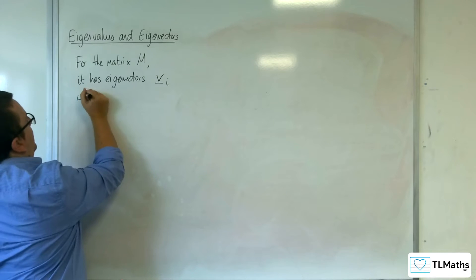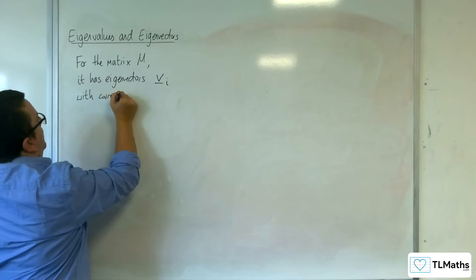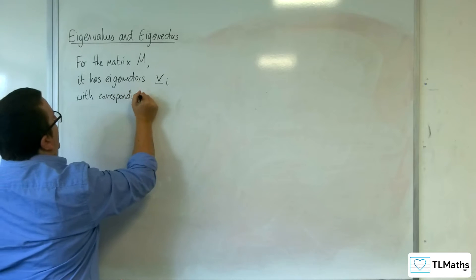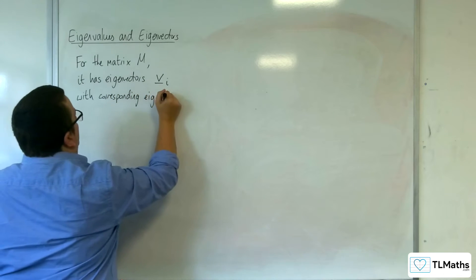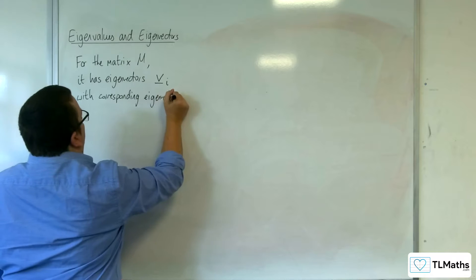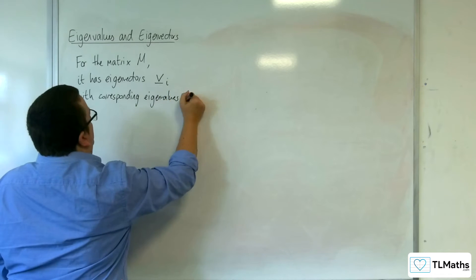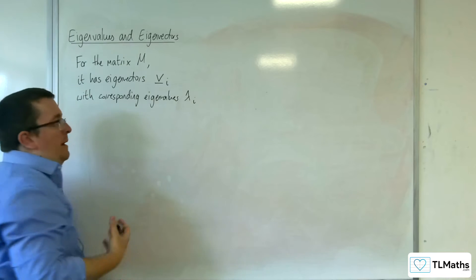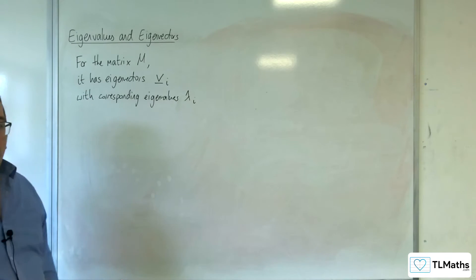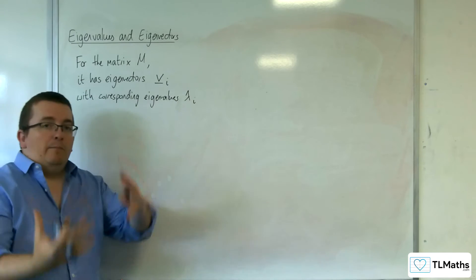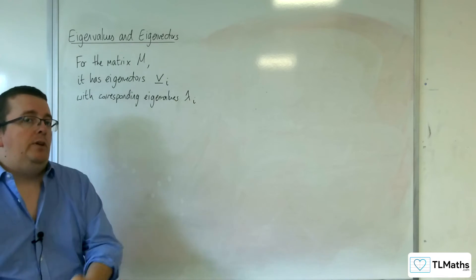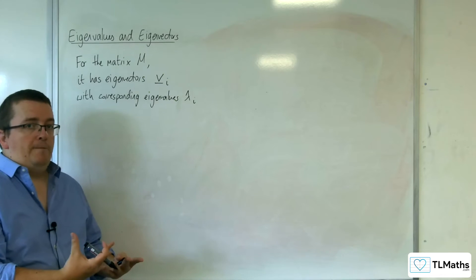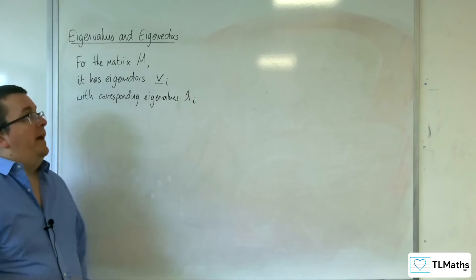These eigenvectors have corresponding eigenvalues, which are represented by the Greek letter lambda: lambda 1, lambda 2, lambda 3. So lambda 1 goes with V1, lambda 2 goes with V2, and lambda 3 goes with V3.